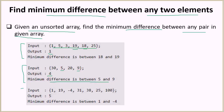In the third example we have 1, 19, -4, 31, 38, 25, and 100. The minimum difference is 5, that is between -4 and 1. Note that there can be negative numbers inside the array. In this example the negative number -4 gives us the minimum difference: 1 minus (-4) equals 5.